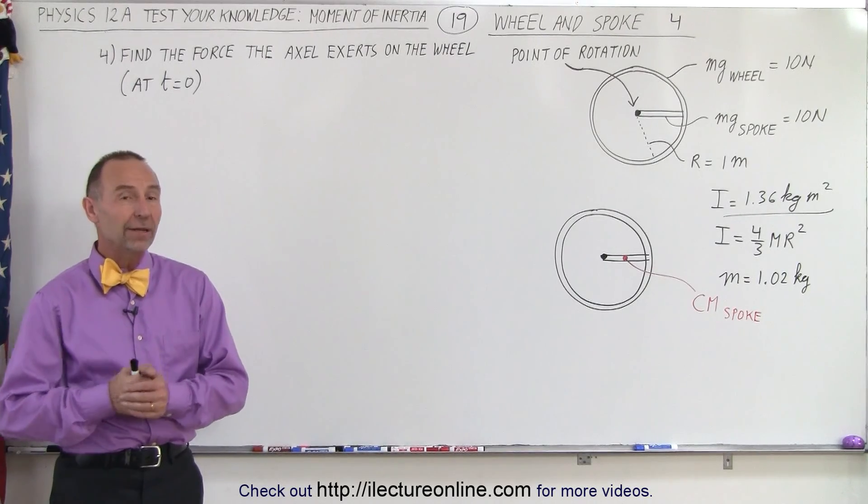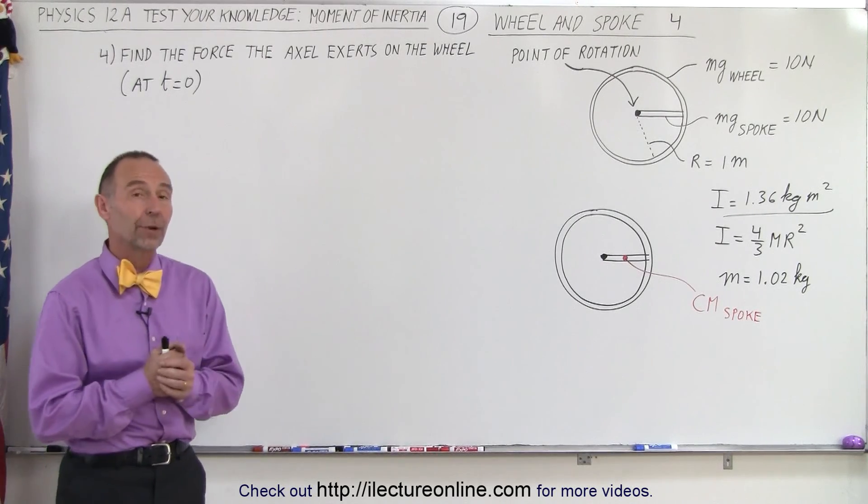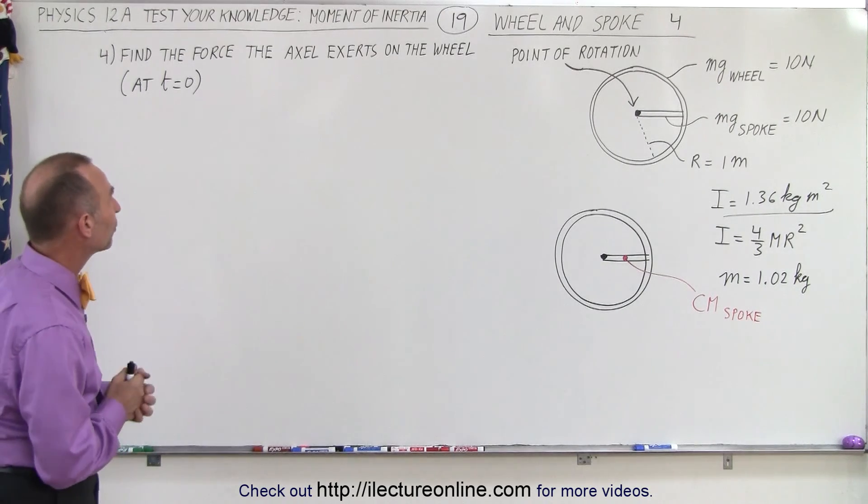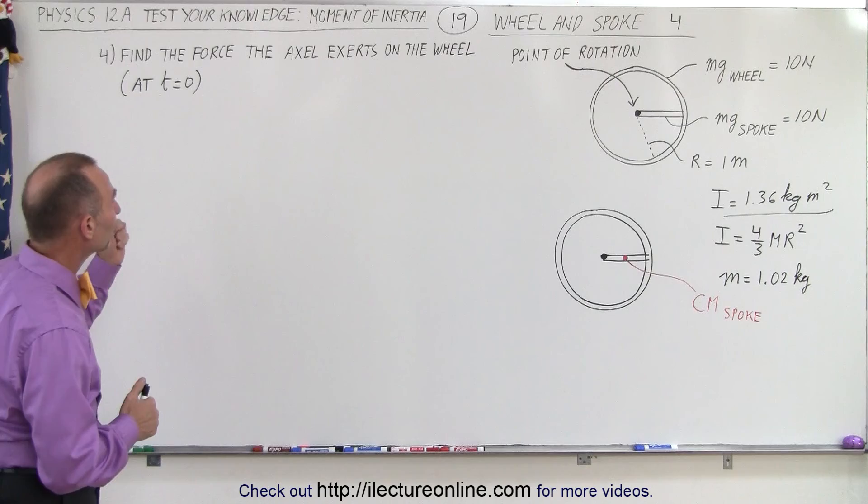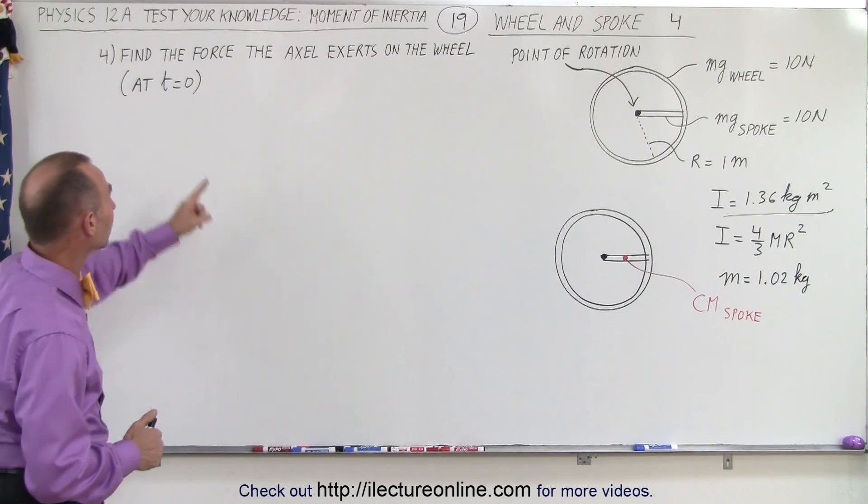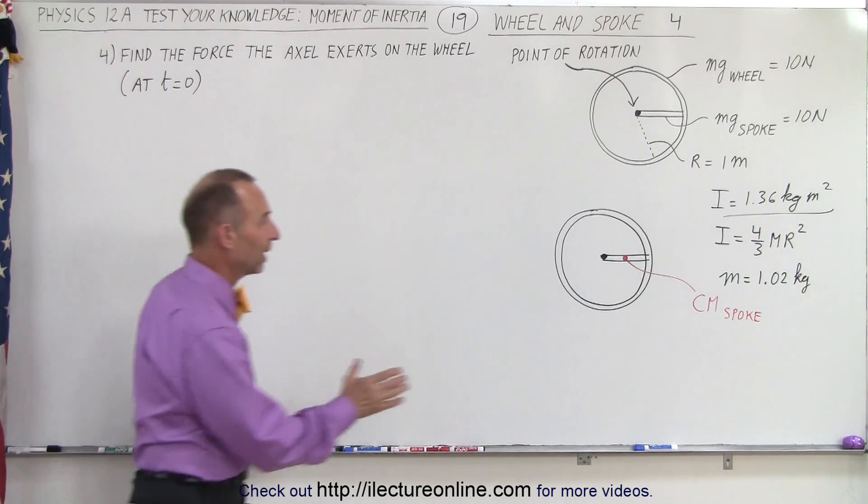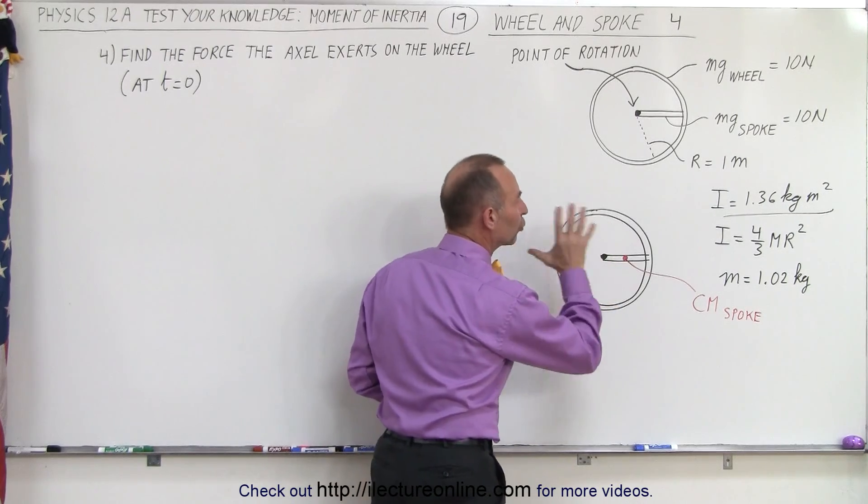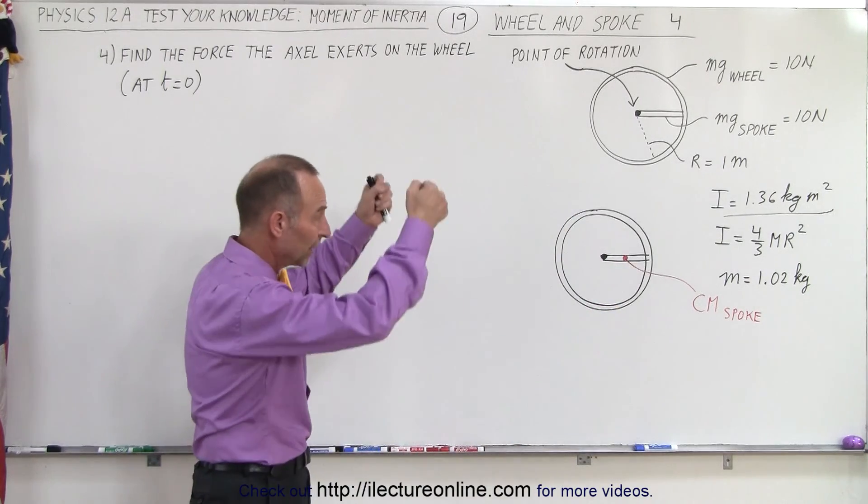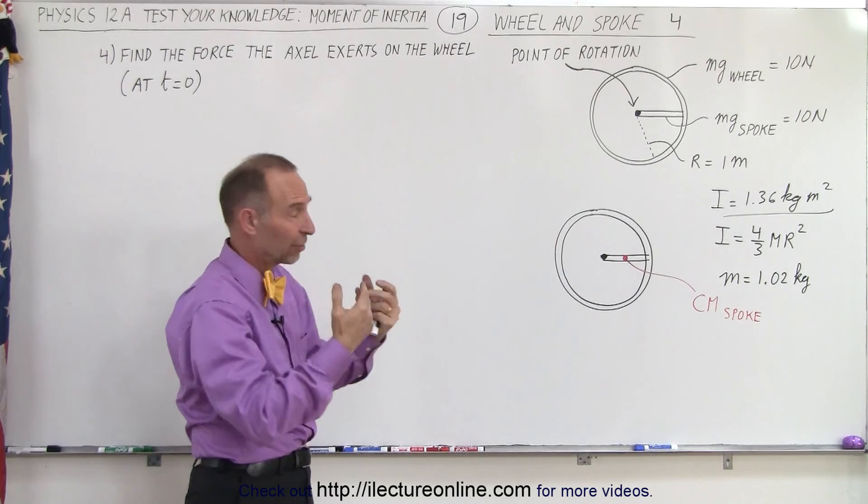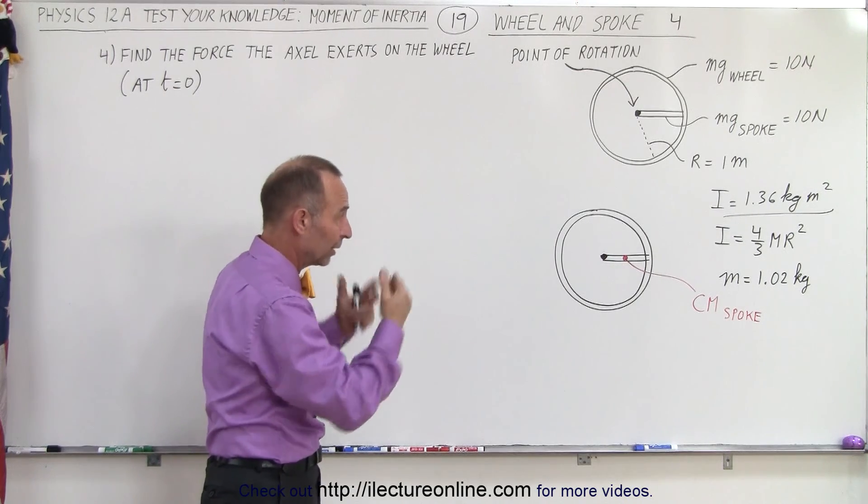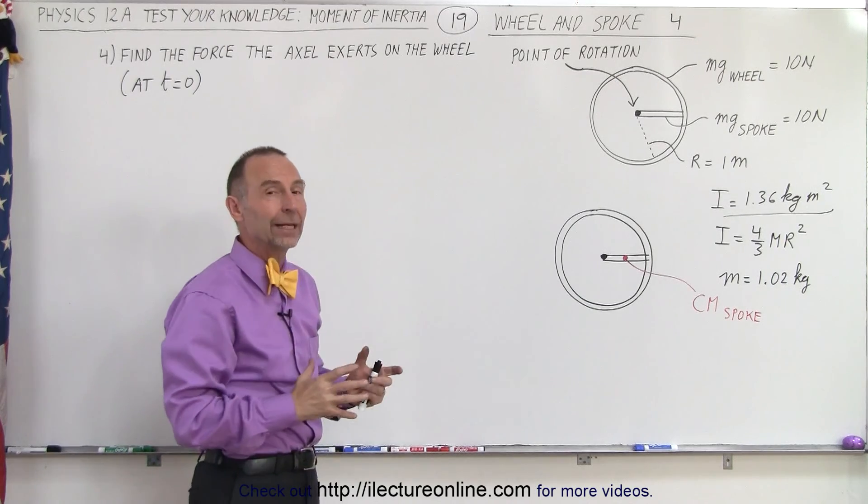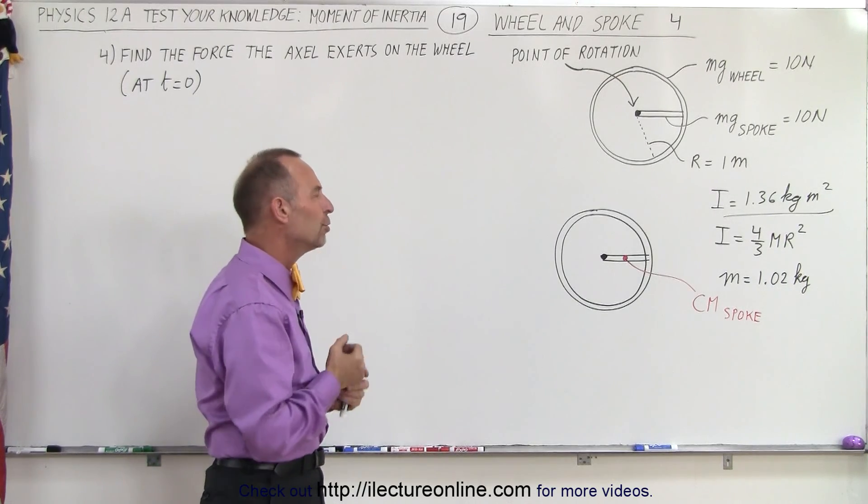Welcome to our lecture online. Our next challenge on this particular problem: we have the ring and we have the spoke, the wheel and the spoke. We're trying to find the force the axle exerts on the wheel at time equals zero, which means at this very moment in time, what is the force of the axle exerting on the wheel? Of course, you have the wheel hanging down from the axle, so the axle supports the weight of the wheel and the weight of the spoke, but then the wheel and spoke are accelerating. So how do we do that?